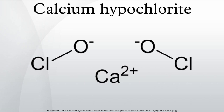Calcium hypochlorite is a yellow-white solid with a strong smell of chlorine. It is not highly soluble in water and is more preferably used in soft to medium hard water. It has two forms: dry and hydrated. The hydrated form is safer to handle.